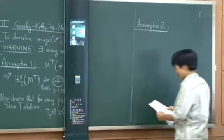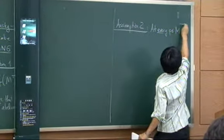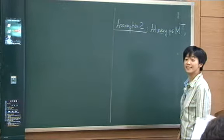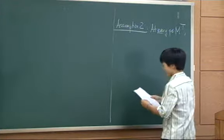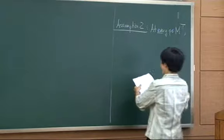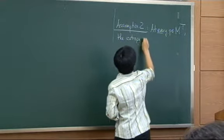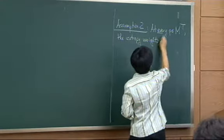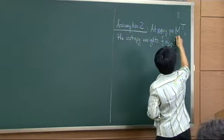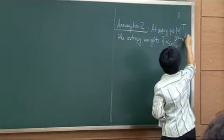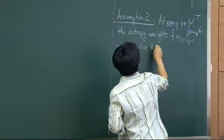The next assumption is that at every one of these isolated points, I look at the isotropy representation and those weights, and the requirement I place — this is also a very strong condition — is that the isotropy weights are pairwise linearly independent when viewed in the dual Lie algebra vector space.